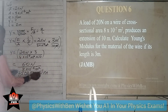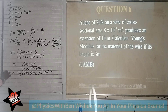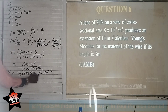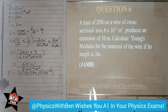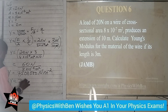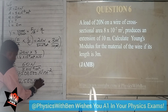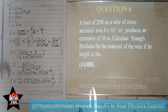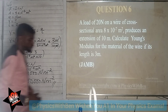Simplifying, and making sure to include the correct units of Pascals (Nm⁻²). Therefore, the Young's modulus of the wire is 7,500,000 Pascals, which is 7.5×10⁶ Pa. That is the answer — as simple as ABC.